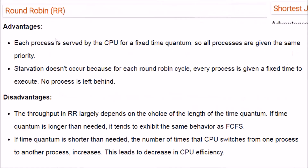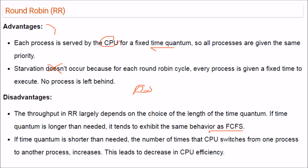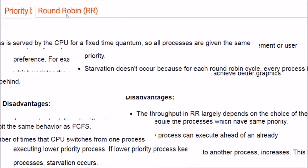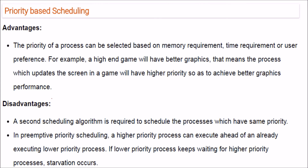Round Robin gives each process a fixed time quantum, so all processes share equal priority and starvation does not occur. However, performance depends heavily on the chosen quantum length: too long and it behaves like FCFS; too short and excessive context switching increases overhead, reducing CPU efficiency.